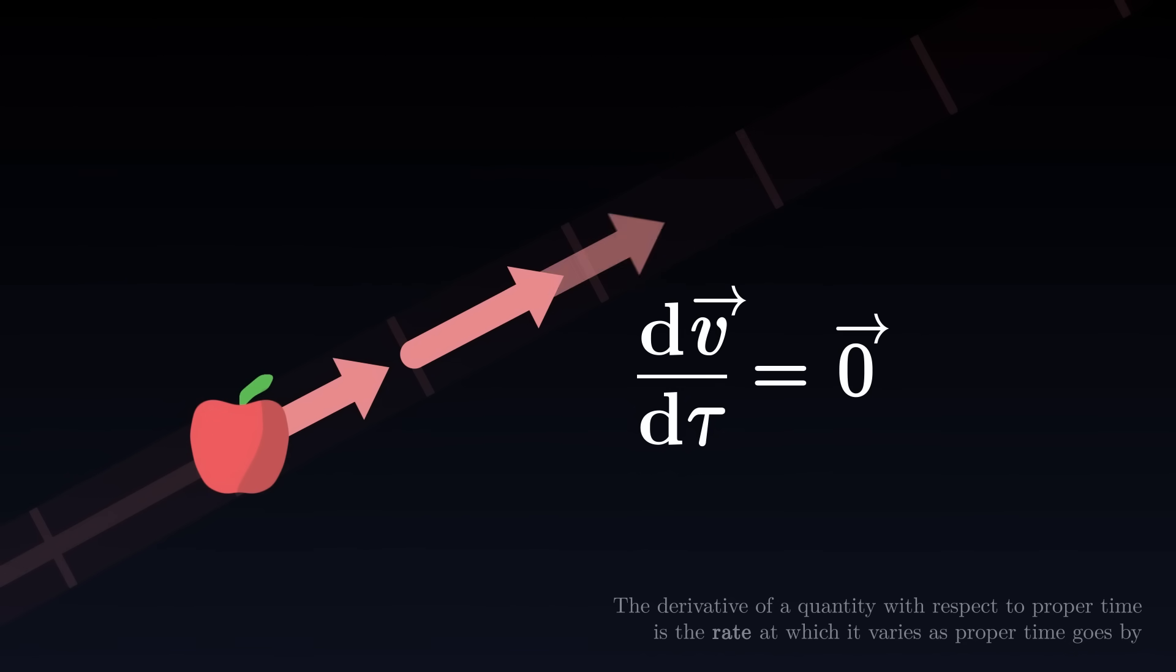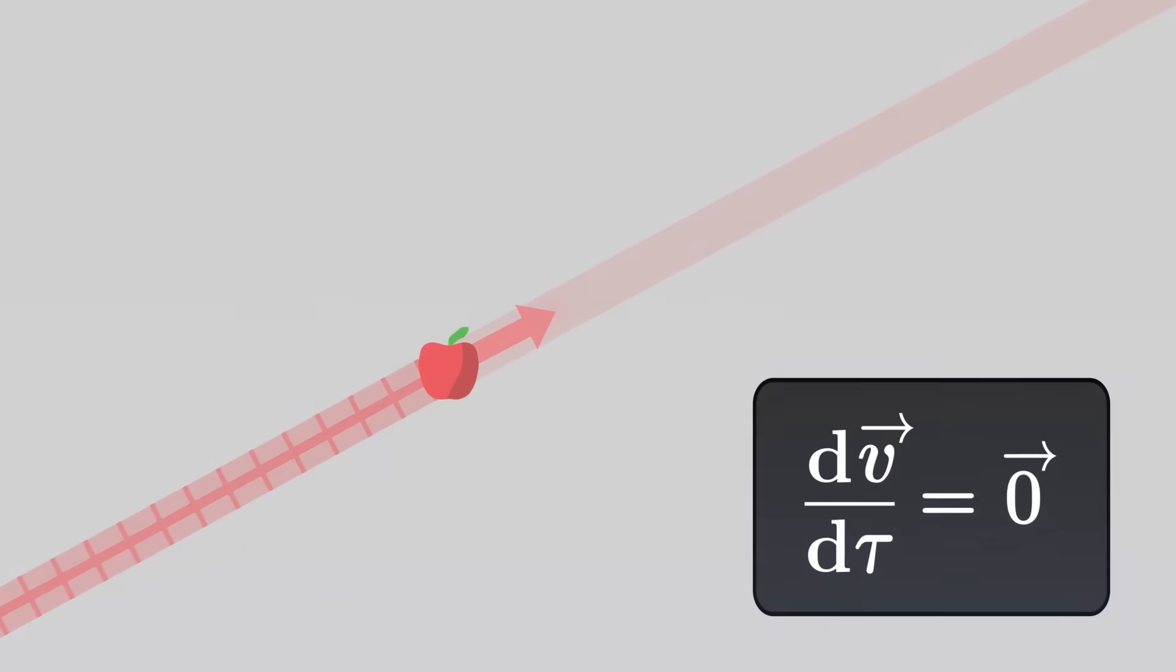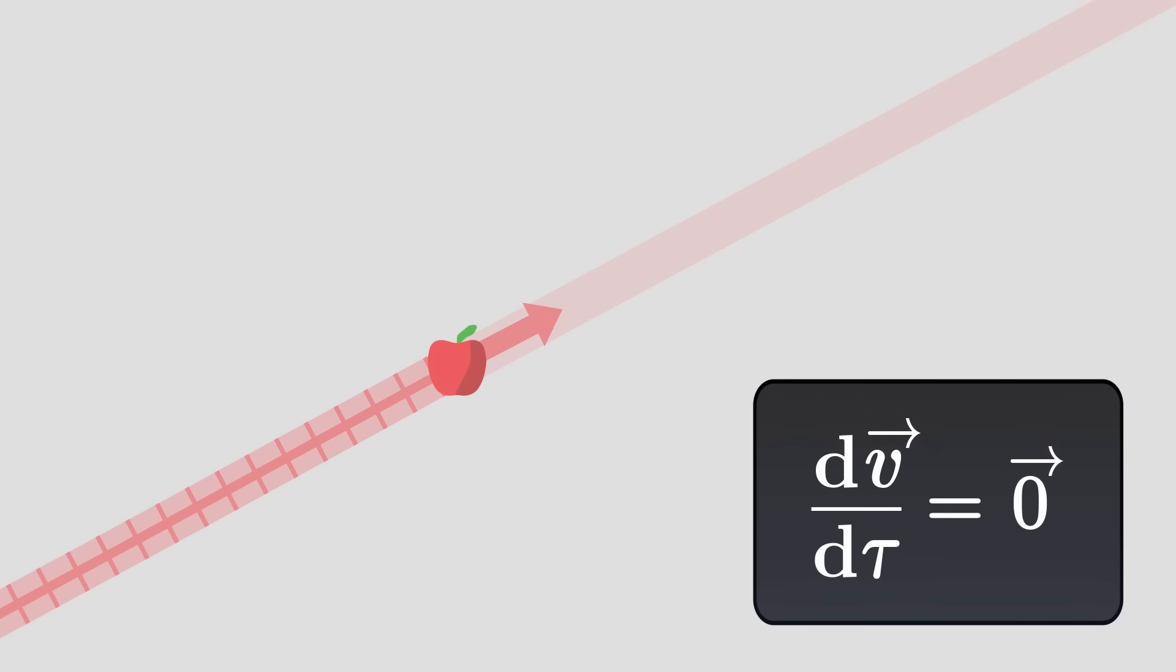Along the trajectory, the velocity vector of the apple does not vary. This equation simply says that the natural movement of bodies is non-accelerating, and therefore that when they experience no force, objects tend to move straight ahead.